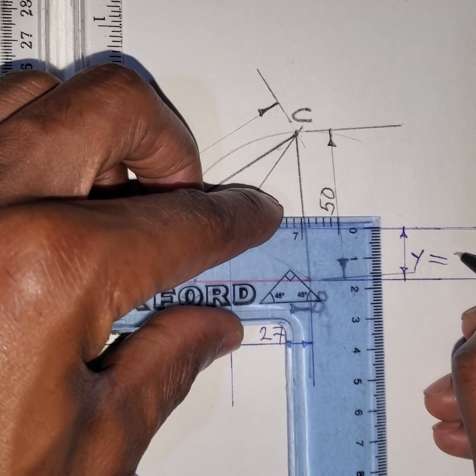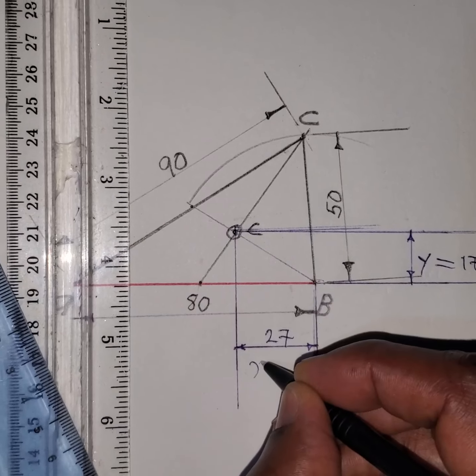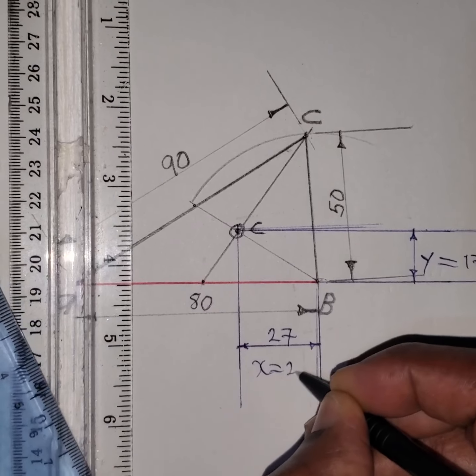So y is equal to 17 and x is equal to 27.